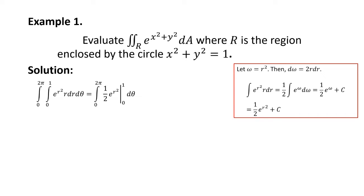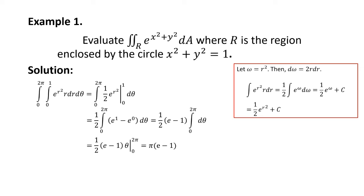So now, evaluating the inner integral from 0 to 1, we'll have (1/2)(e^1 − e^0) dθ from 0 to 2π. Take note that e^1 = e and e^0 = 1, and (e − 1) is constant with respect to θ. So we'll have (1/2)(e − 1) · θ evaluated from 0 to 2π. So finally, our answer is π(e − 1).